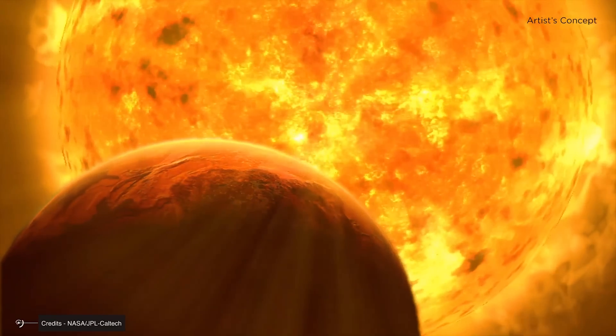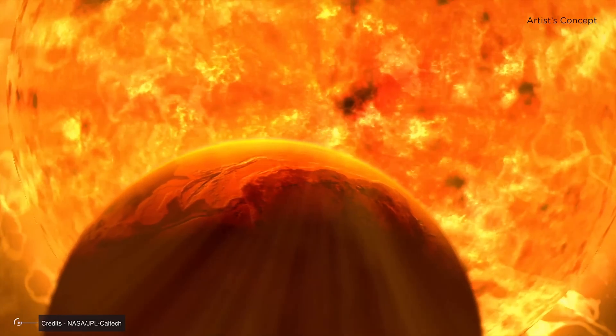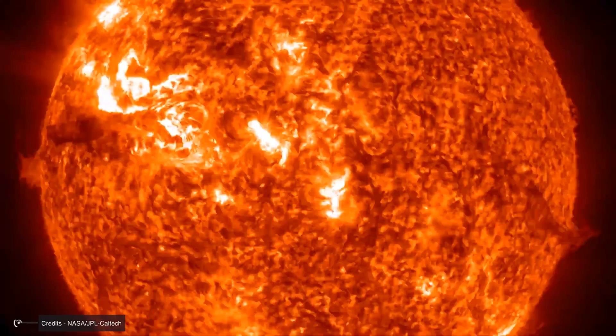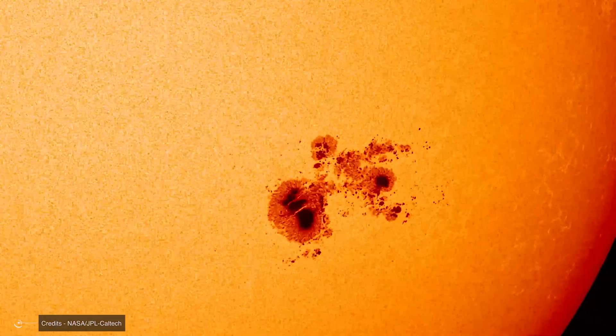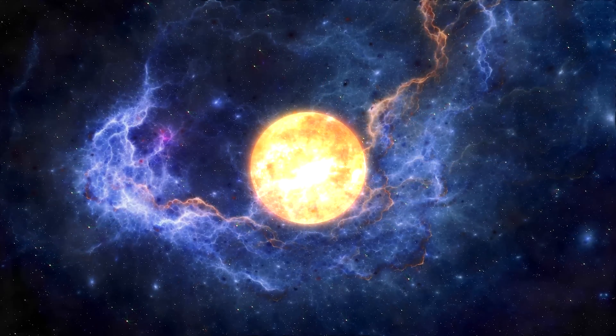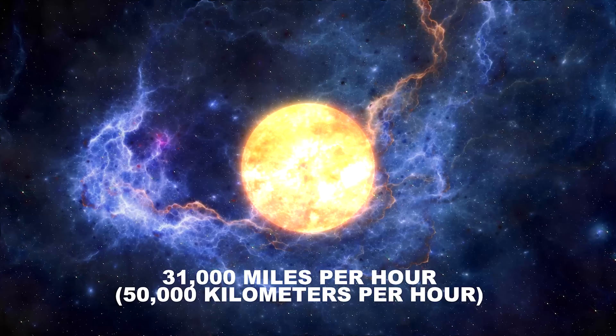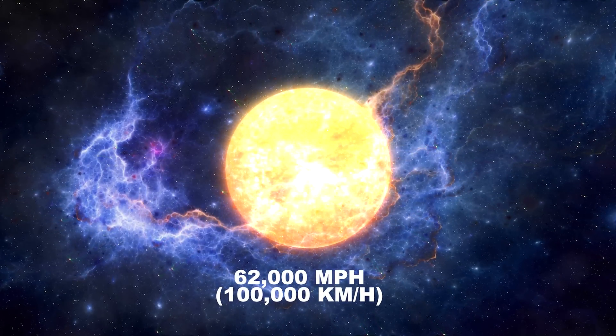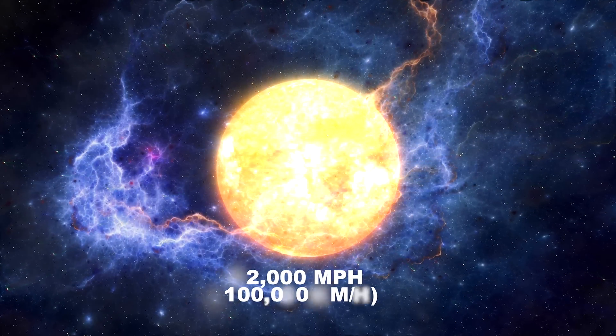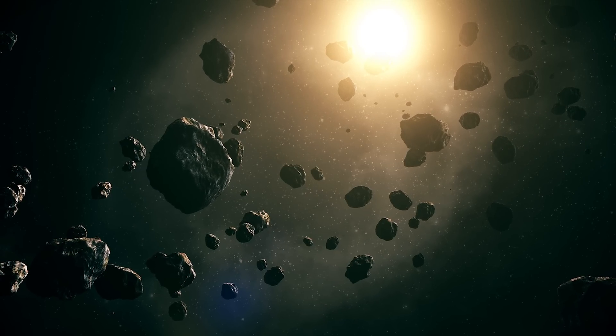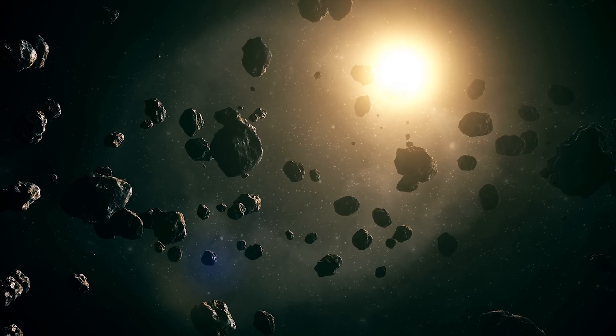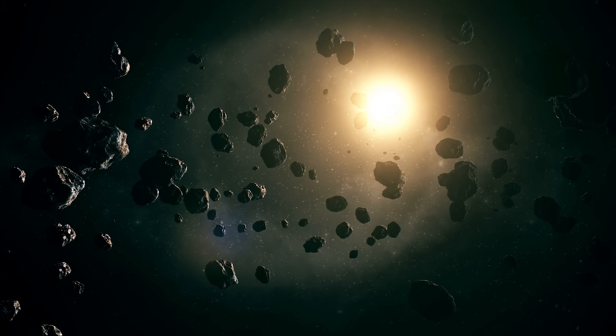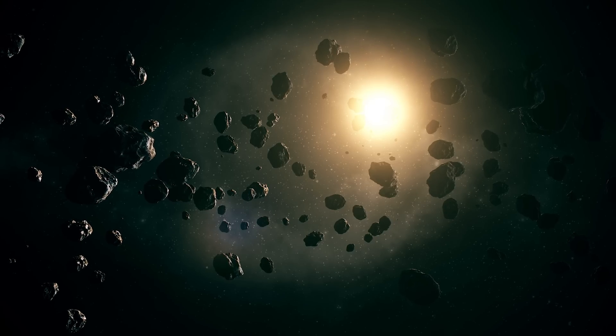To put this distance in perspective, it means Gliese 710 will penetrate deep into the Oort cloud, much deeper than any other star has done in the recent history of the solar system. The most worrying, at least for our descendants, and fascinating thing at the same time, is that Gliese 710 moves unusually slowly compared to other stars, at only 31,000 miles per hour or 50,000 kilometers per hour at its closest approach instead of the typical 62,000 miles per hour or 100,000 kilometers per hour or more. This means it will have plenty of time to exert its gravitational influence, remaining in the Oort cloud for tens of thousands of years, shaking it like a cosmic snow globe, and potentially sending swarms of comets toward the inner solar system in successive waves that could last millions of years.